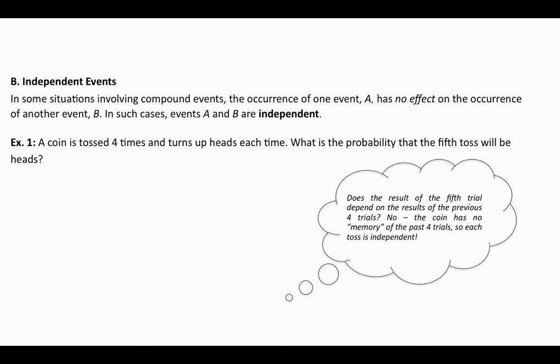Here's an example. A coin is tossed four times and turns up heads each time. What is the probability that the fifth toss will be heads? Here's our thought bubble — this is what we'd like you to be thinking when you do examples involving compound events. Does the result of the fifth trial depend on the results of any of the four previous trials? And of course the answer is no, because every time you flip a coin it's a fresh slate. The coin has no memory of the past four trials, so every single toss is independent.